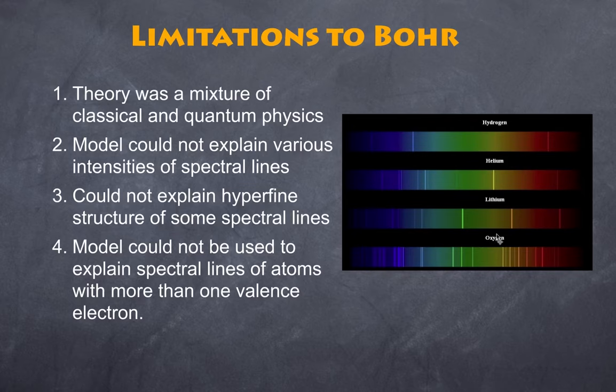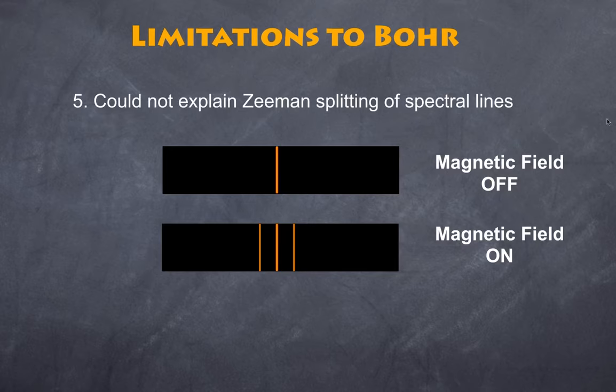Here I have spectral lines for hydrogen, helium, lithium, and oxygen. Bohr's model only works with hydrogen. It does not work with understanding helium, lithium, oxygen, or any other element for that matter.